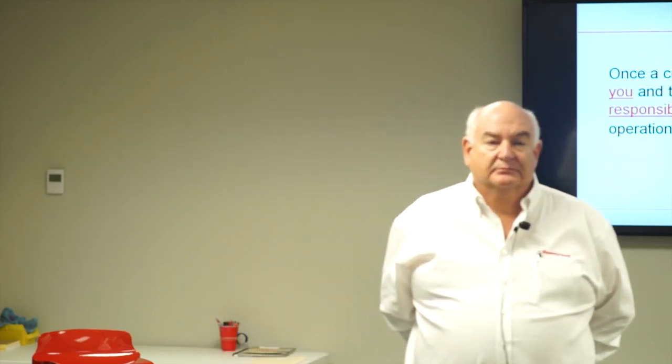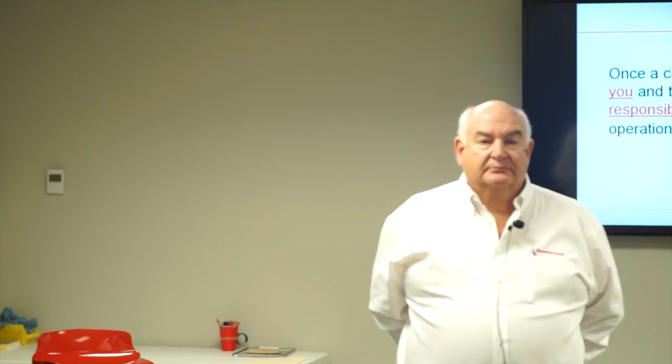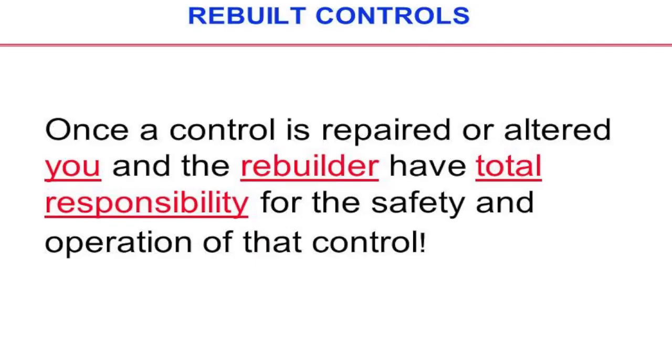The original manufacturer's name must be physically removed — not covered up. You cannot cover it; it has to be removed. And they also have to have a sticker on the device that says 'Rebuilt By' with their name. So if you open an electrical cabinet, the box wouldn't have the manufacturer's name on it, but there would be a sticker that says 'Rebuilt By.'